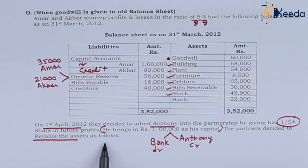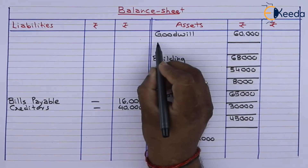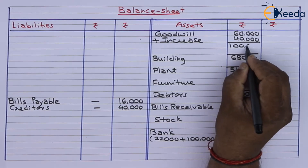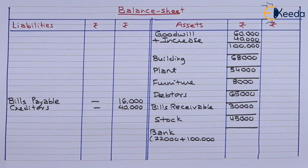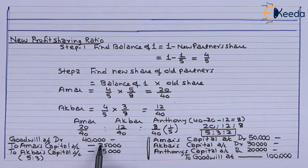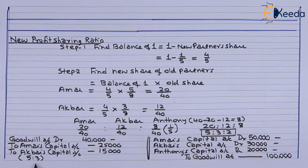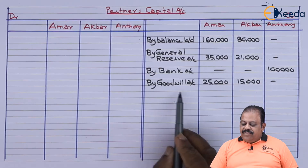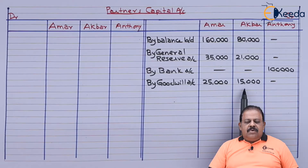The partners decided to revalue the assets as follows. Goodwill at Rs. 1,00,000. There is an increase of 40,000, so goodwill becomes the revalued amount of 1,00,000. This 40,000 will be credited to partners' capital accounts. Goodwill account debit 40,000 — to Amar's capital account 25,000, to Akbar's capital account 15,000. That is distributed in their old ratio. Partners' capital account credited by goodwill: Amar 25,000, Akbar 15,000.